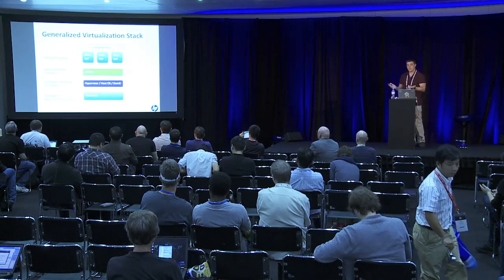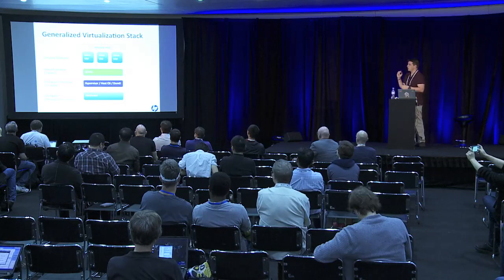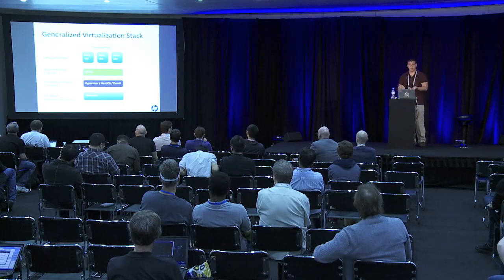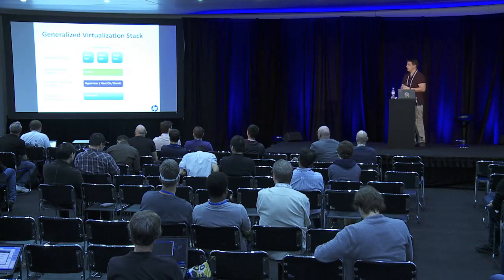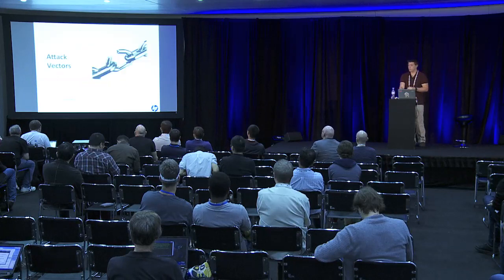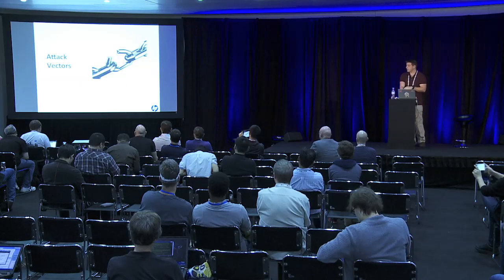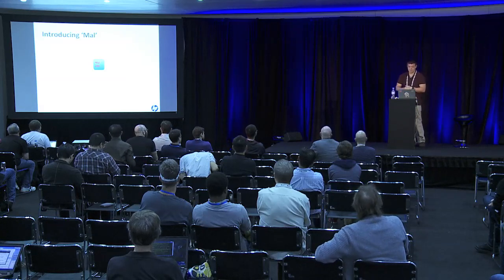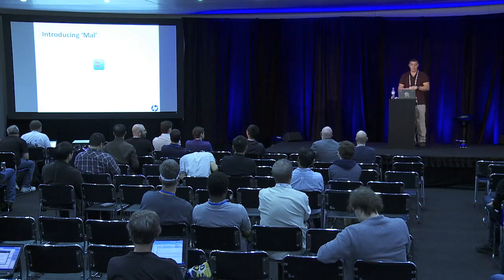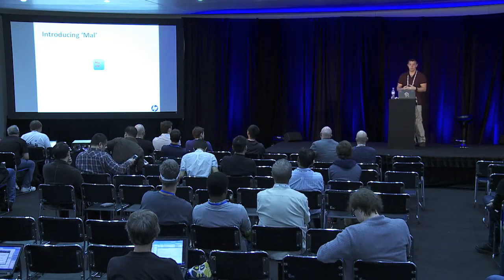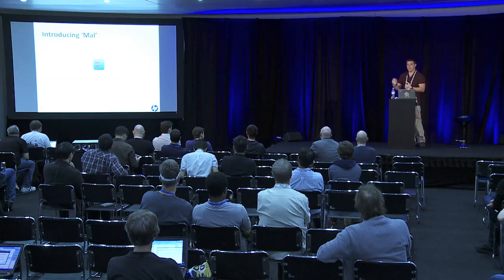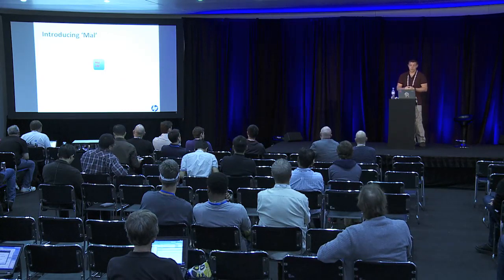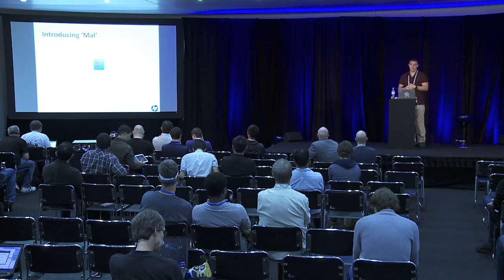This is what our generalized stack is going to look like for the rest of this talk. I'm going to discuss different ways that different parts of this stack can be attacked, the results of those attacks, whether those attacks are realistic in today's world, whether they might be in the future, and some of the mitigating controls you can put in place. Our actor is called Mal, short for Mallory — a malicious virtual machine. This could be a VM created for malicious purposes, or a perfectly benign VM that has been compromised by some outside attacker.